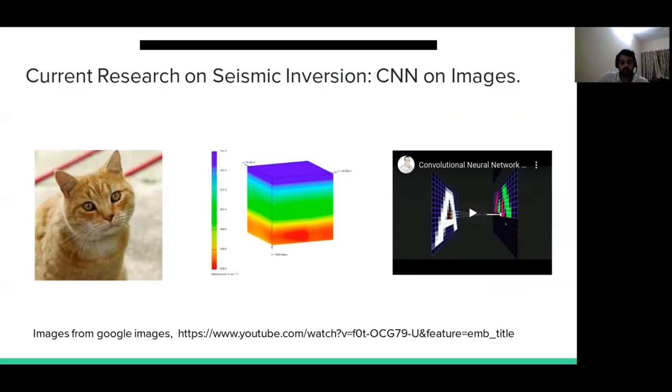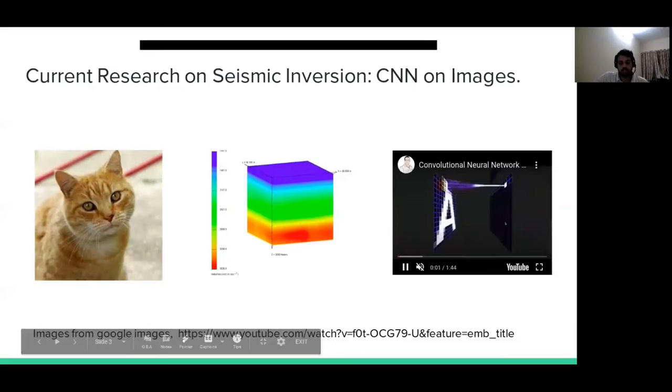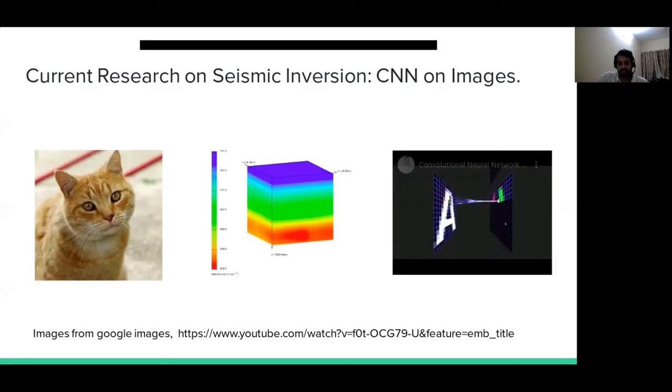First, they consider the seismic data as image data and try to apply a convolution-based network to process it. An illustration of how convolutions work is shown in this video. As you can see, a filter or weight matrix spans the entire image in all the dimensions and computes local features from each location. If this image was a 3D image, you would see this 3D filter cube spanning the image in all three dimensions.